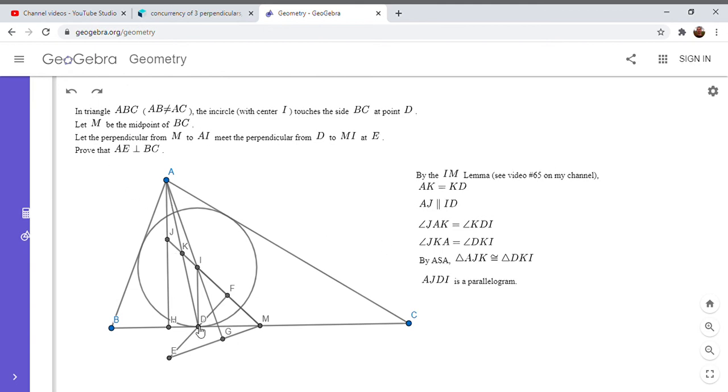So AJDI is a parallelogram. And so that gets us to where we want because we wanted to show that JD was parallel to AI. And that's true then, because since AJDI is a parallelogram. And so since AI is perpendicular to ME, that means JD has to be perpendicular to ME. And if we know that JD is perpendicular to ME, then we've shown that D is the orthocenter of the triangle that we wanted, which was JEM.